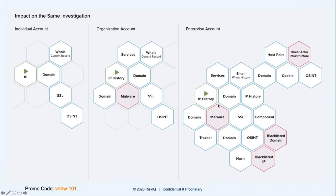If you look over to the enterprise account, you can see things like blacklisted IP, blacklisted domain, which is a representation of our analyst insights — an enterprise-only feature. And then if you take a look at the threat actor infrastructure, that might be an indicator we provided under our RiskIQ indicators, part of our Intel articles, which we'll talk more about in a bit. This is just a good visual for the additional information you're going to get out of having an enterprise account.